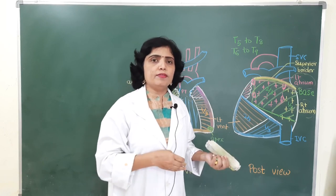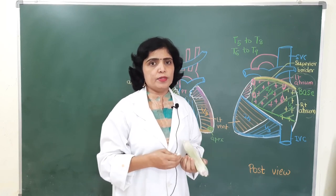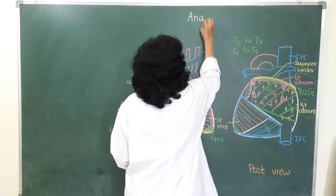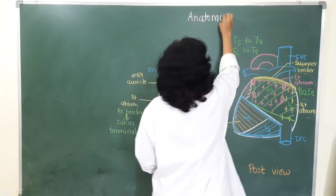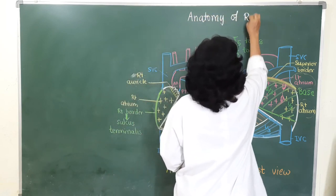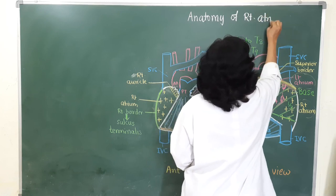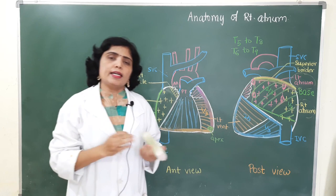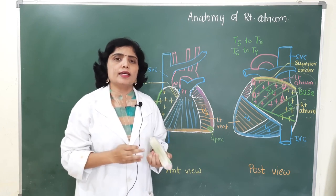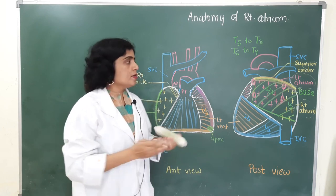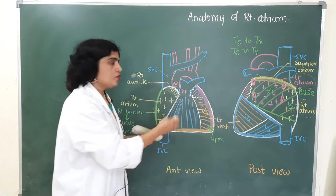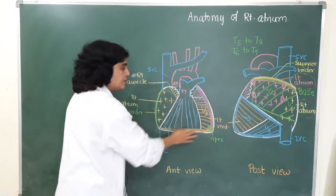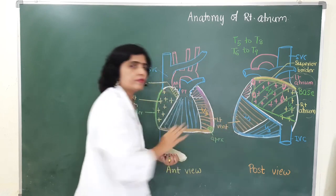In this video we are going to see the anatomy of the right atrium. The heart consists of four chambers: right and left atria and right and left ventricles. We are familiar with two diagrams — the anterior view of the heart and the posterior view of the heart.